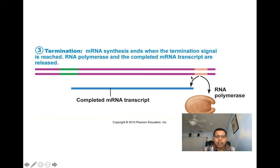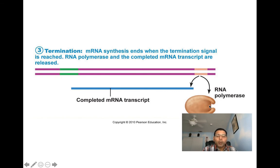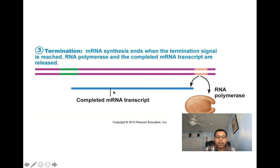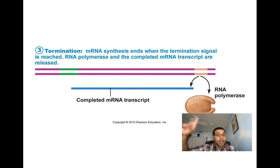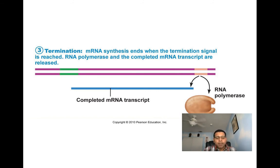Termination happens when RNA polymerase reaches a special base sequence called the termination signal. Transcription ends and the new mRNA molecule separates from the template. Before translation can begin, editing and more processing is needed to clean up the mRNA.